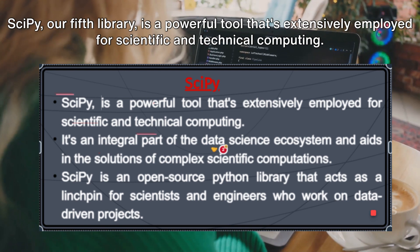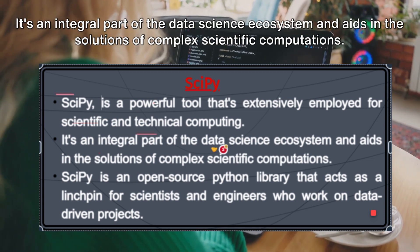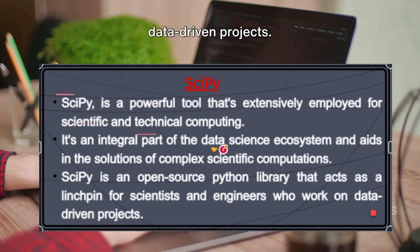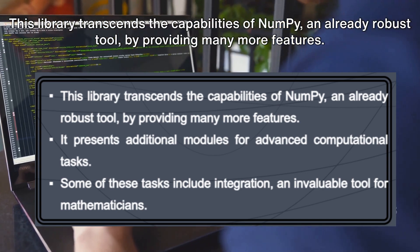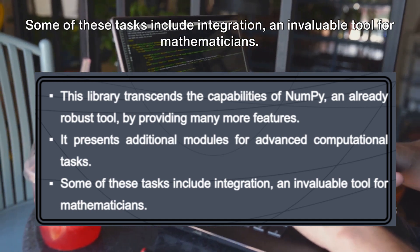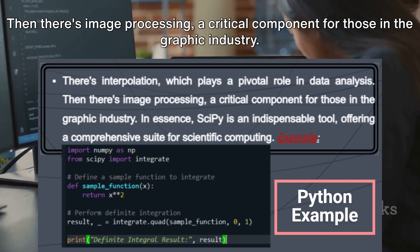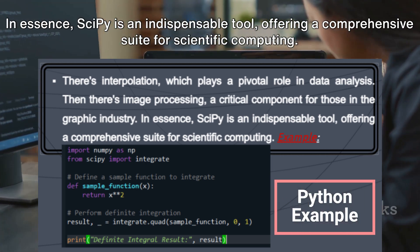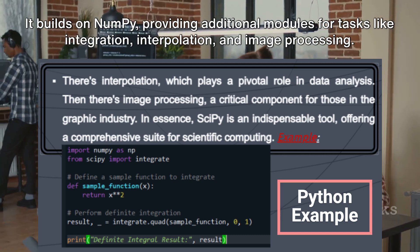SciPy, our fifth library, is a powerful tool extensively employed for scientific and technical computing. It's an integral part of the data science ecosystem and aids in solving complex scientific computations. SciPy is an open-source Python library that acts as a linchpin for scientists and engineers working on data-driven projects. It transcends the capabilities of NumPy by providing many more features, including additional modules for advanced computational tasks such as integration, interpolation, and image processing — making it an indispensable tool offering a comprehensive suite for scientific computing.